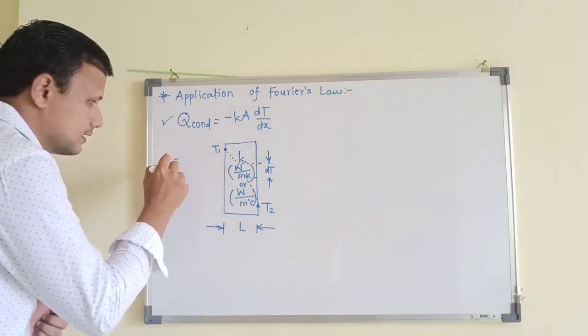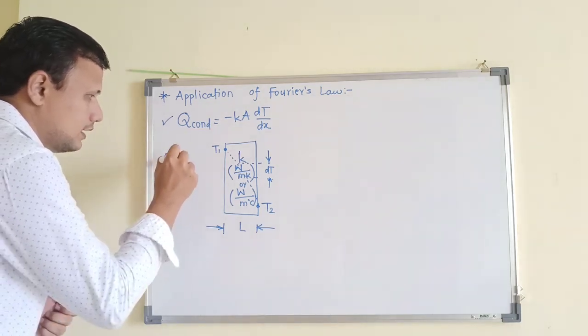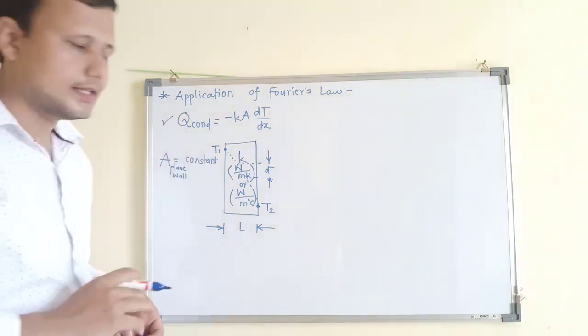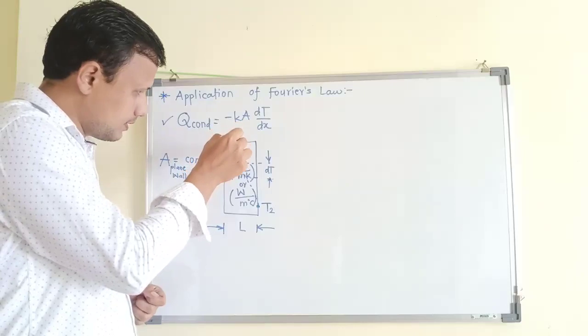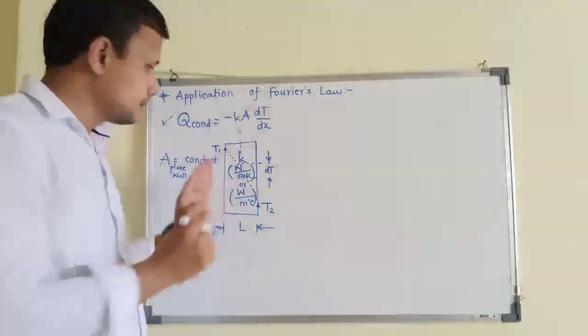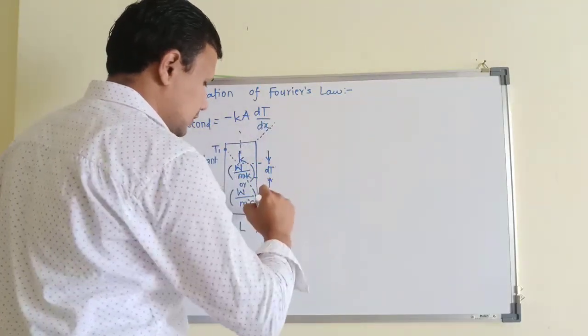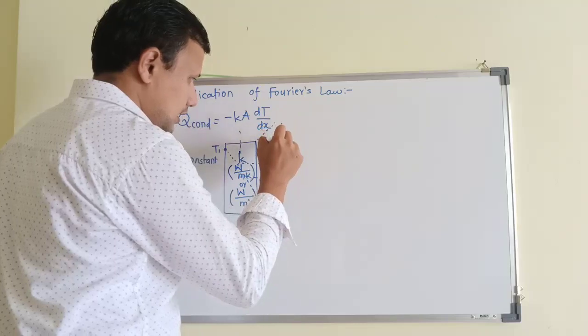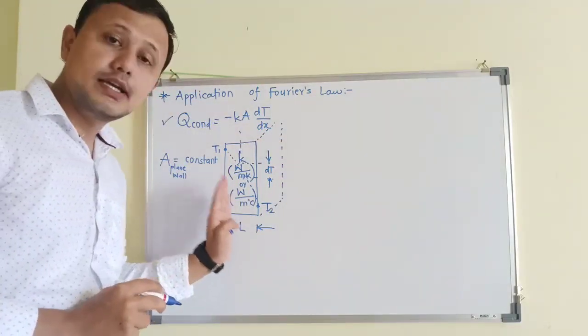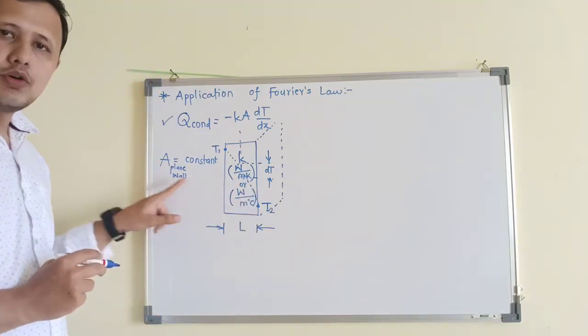Area for a plane wall is always constant. It does not change. How can we say that? For example for this same plane wall if we take a section in the middle of it still we will see that the cross section is same. The cross section will be perpendicular to the plane of this paper. So it will be same. It is not going to change at any point along the thickness of the wall. That is why we call that area of the plane wall is constant.